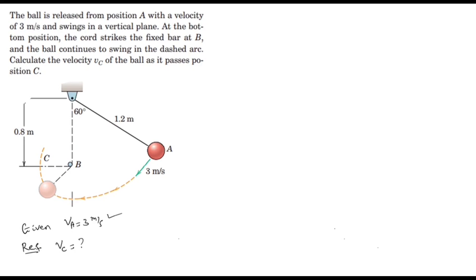We can apply the work-energy principle. We know the energy at point A, and once we know the energy at point A and at point C, then we can figure out what the output velocity at position C would be.